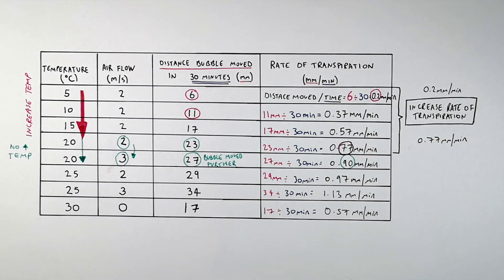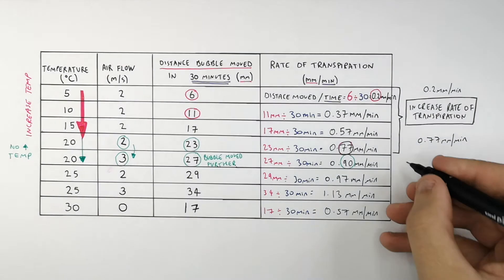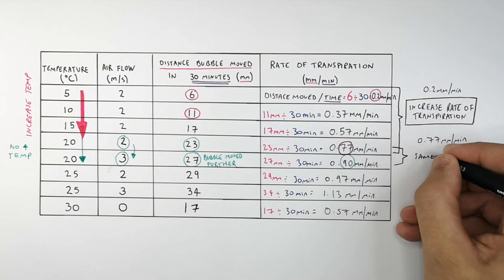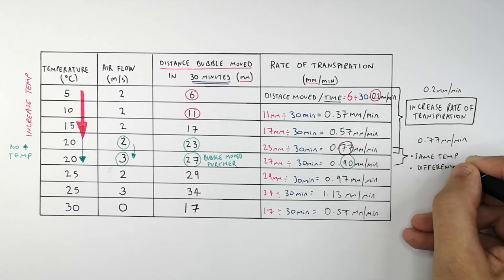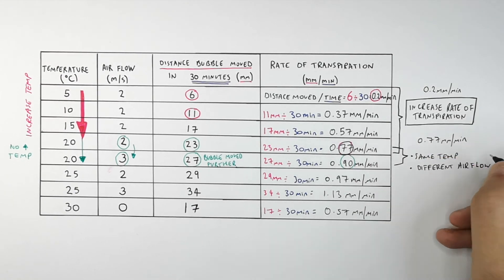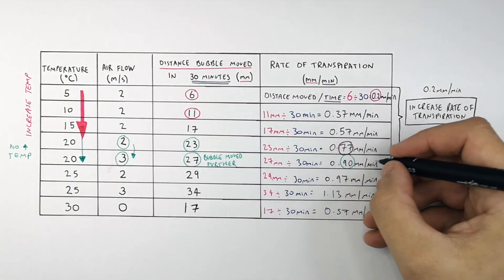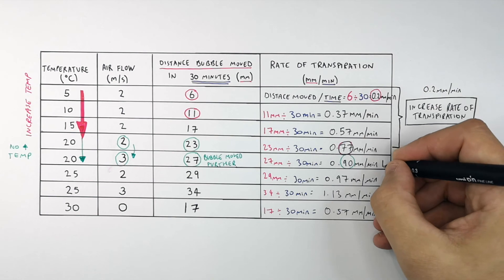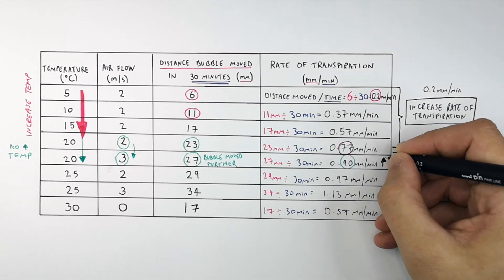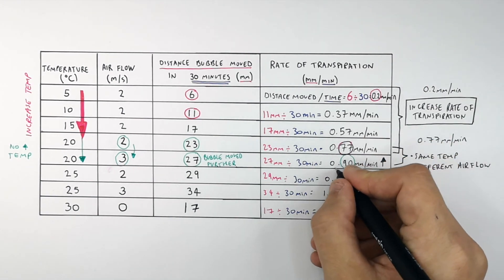This is due to an increased rate of evaporation of water from the stomata and out of the leaf. Even though the temperature was the same, a different airflow was applied. This shows that if you increase the airflow, you will also see an increase in the rate of transpiration.